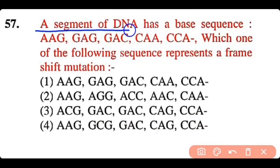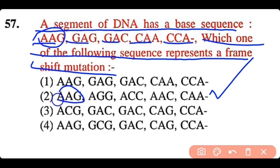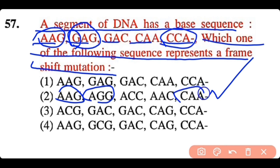Question 57: A segment of DNA has base sequence AAG, GAG, GAC, CAA, CCA. Which sequence represents a frameshift mutation? A frameshift mutation involves addition or deletion of a base in the nucleotide sequence. The correct answer is option 2, where an extra nucleotide is inserted, shifting the reading frame.